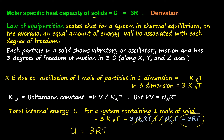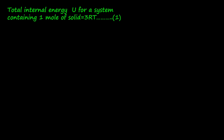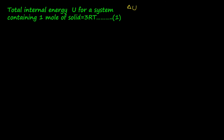This is the first part of the derivation. The total internal energy U for one mole of solid substance is 3RT. Therefore, delta U equals 3R·delta T, since R is a constant and only temperature changes. Molar specific heat capacity Cm is related to heat capacity capital S by the relation Cm equals S divided by mu, where mu is the number of moles.